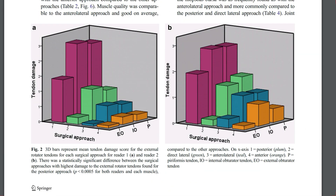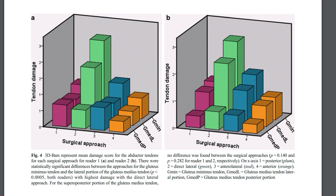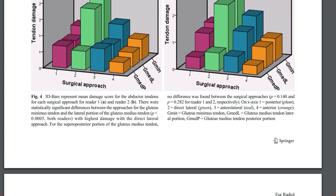On this image you can see which structures are damaged by which surgical approach. We have the posterior approach, the lateral approach, the anterolateral, and the anterior approach. Looking at the external obturator tendon, the internal obturator tendon, and the piriformis tendon, you can see that with the posterior approach they are significantly more heavily damaged than with all other approaches. The same is true for the abductor tendons — with the transgluteal approach there is significantly more damage to the lateral portion of the gluteus medius tendon and the gluteus minimus tendon.